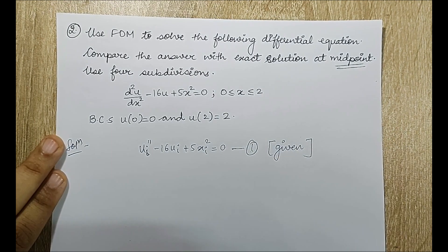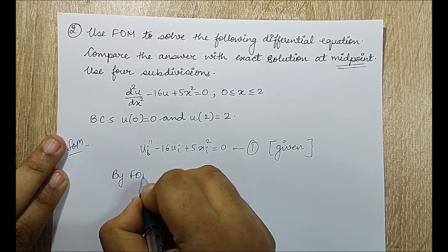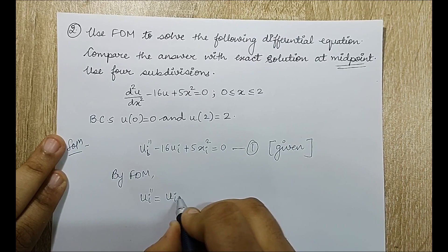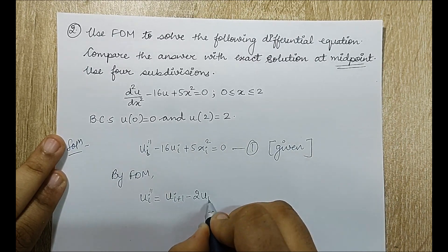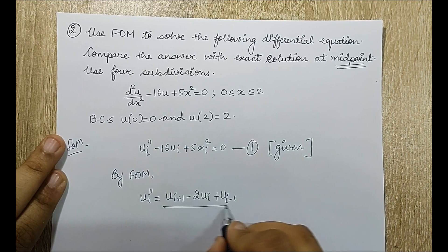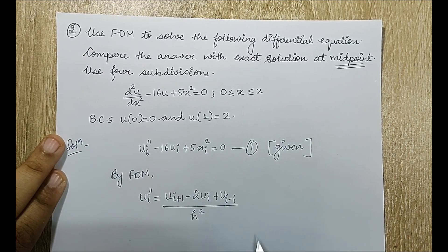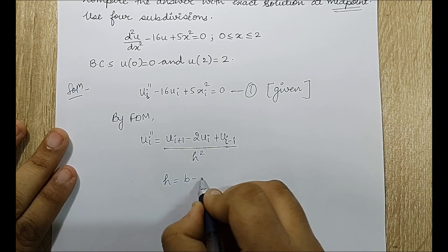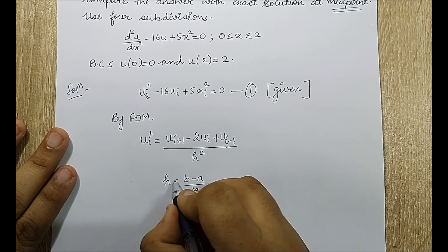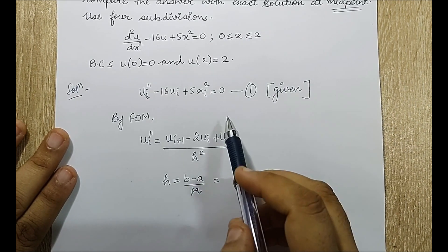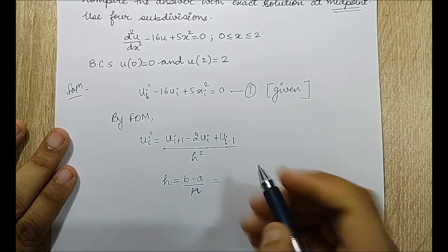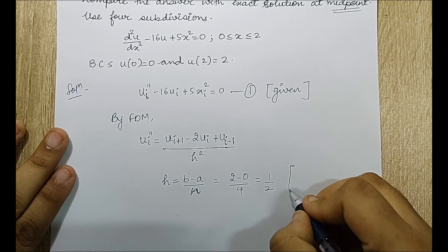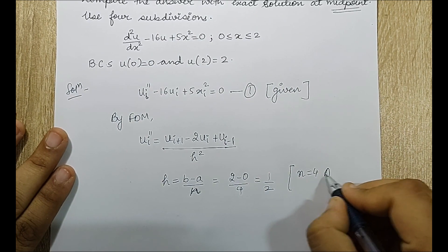By FDM we know u_i double-dash = (u_{i+1} − 2u_i + u_{i−1}) / h². I am assuming n = 4, so h = (b − a)/n. Here b = 2 and a = 0, so h = (2 − 0)/4 = 1/2.